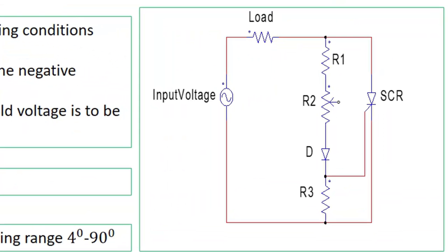In the circuit, a sinusoidal input voltage is applied across the SCR with a load connected, along with components R1, R2, D, and R3. R2 is a variable resistance. The diode works as a rectifier, and R3 is a fixed resistance. The voltage drop across R3 serves as the triggering voltage, i.e., the minimum gate-to-cathode voltage. R2 is varied to control the triggering angle.